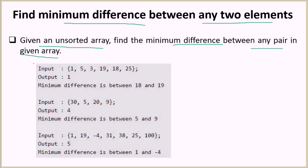Let's look at the examples to understand the problem better. For the first example, we have the input array as 1, 5, 3, 19, 18, and 25. The minimum difference here is 1, because that is the difference between 18 and 19 — so 19 minus 18 equals 1.